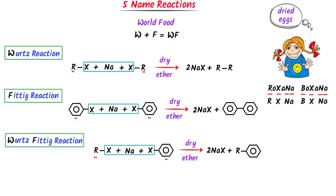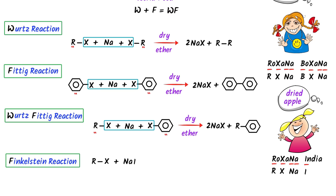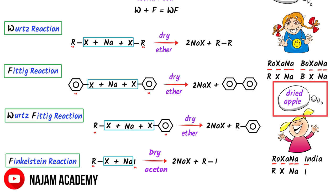Fourthly, this F also stands for Finkelstein reaction. Now consider the sister of Ruxana Buxana — let her name be Ruxana India. She loves to eat dry apple. I capitalize every second letter in Ruxana India. I take R and X, then sodium. This I in India stands for iodine. Sodium reacts with the halogen to give sodium halide plus alkyl iodide. The dry apple means dry acetone. This is the complete Finkelstein reaction.